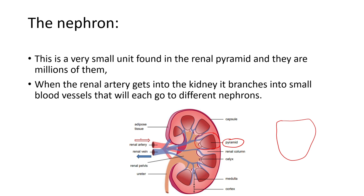There are millions of nephrons found in the renal pyramid. The renal artery brings blood with waste products into the kidney, and as it enters, it branches out into smaller blood vessels. Each of those blood vessels will go to different nephrons so that the blood can be cleaned. The blood in the renal artery has waste products and is oxygenated, and those waste products travel to the pyramid to enter the nephron.